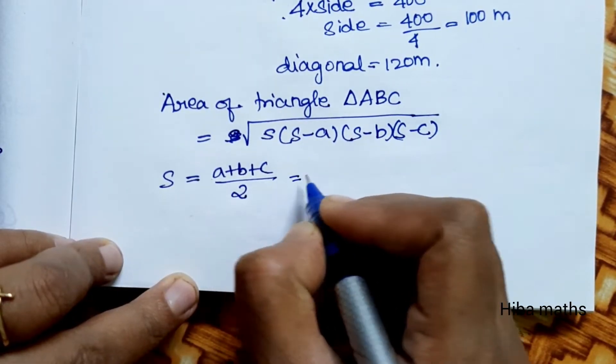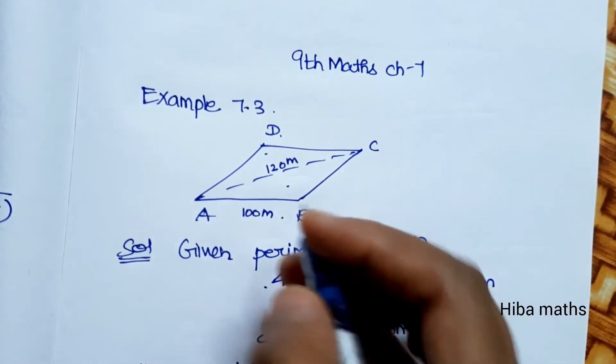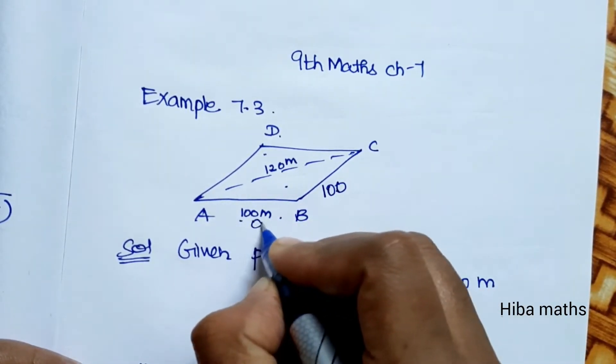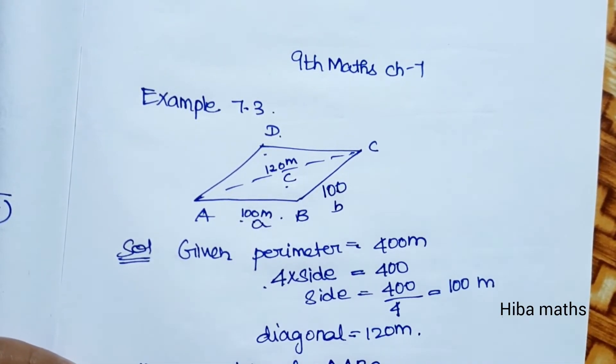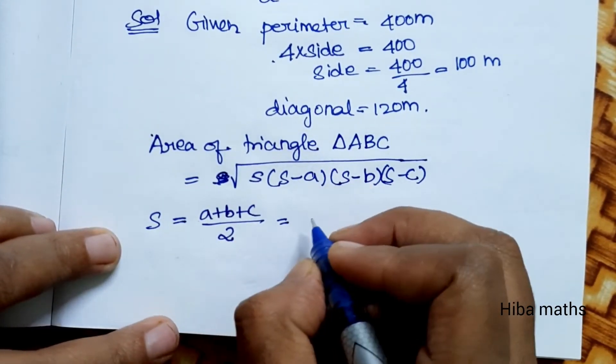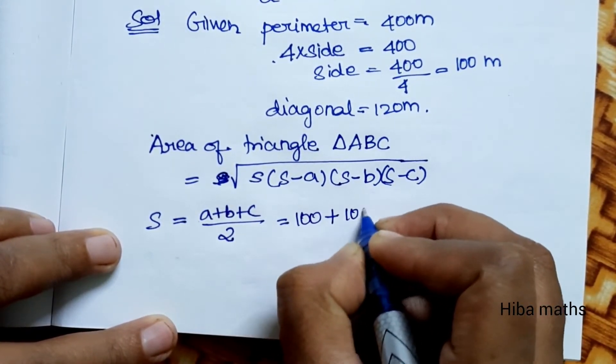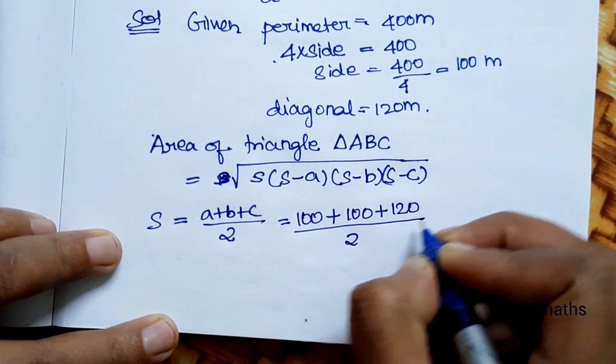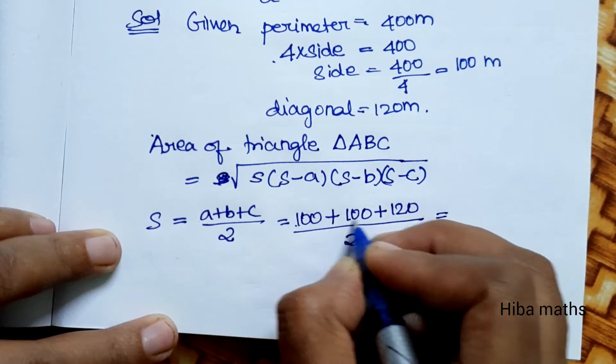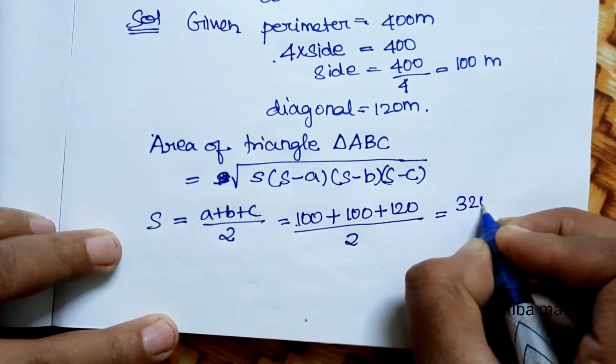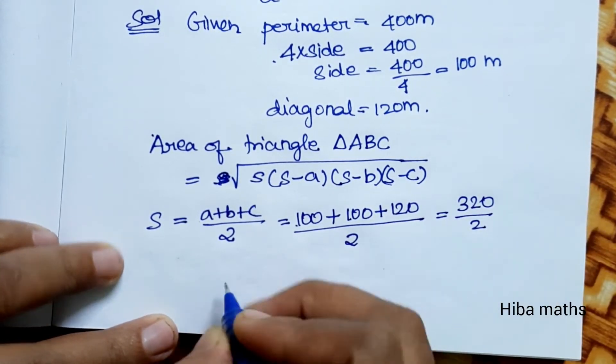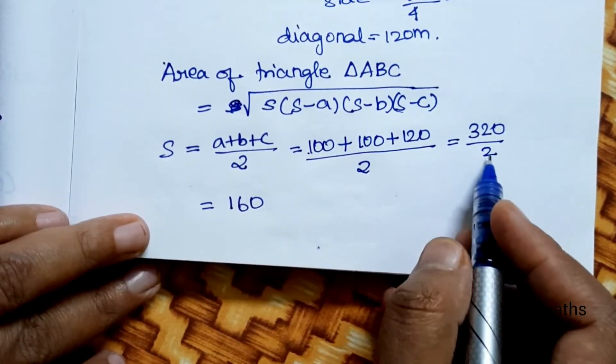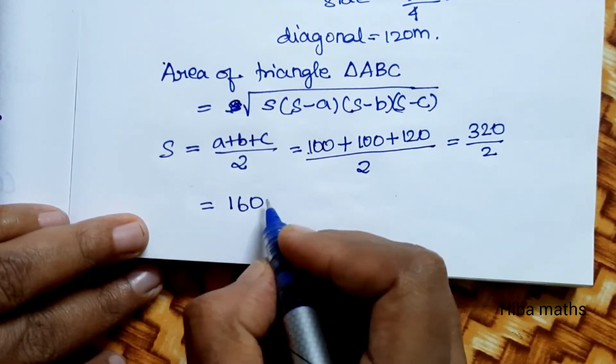From the diagram, A is 100, B is 100, and C is 120. Substituting these values, we get (100 plus 100 plus 120) divided by 2, which is 320 divided by 2, equals 160. So the S value is 160.